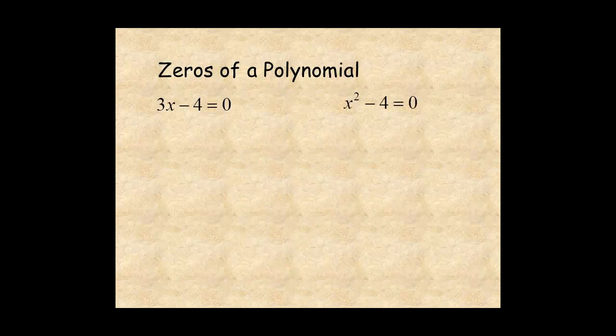Remember from previous lessons on polynomials: values of the variable that make a polynomial equal to 0 are called the zeros of the polynomial. To find the zeros of a polynomial, set the polynomial equal to 0 and solve the equation.